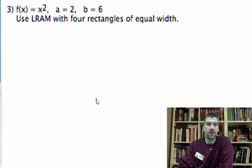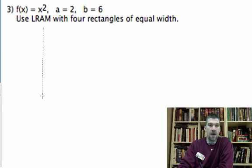Alright, with this problem, what we want to do is look at a curve, x squared, and we want to use LRAM with 4 rectangles of equal width. We want to find the area approximation under that curve from 2 to 6. What's going on? We have half of a parabola.